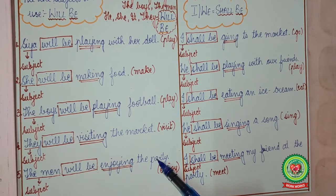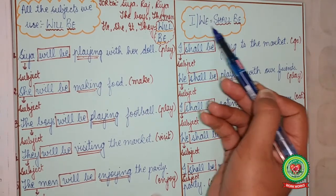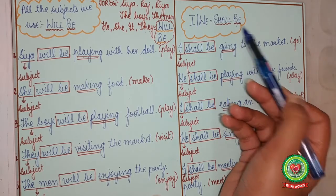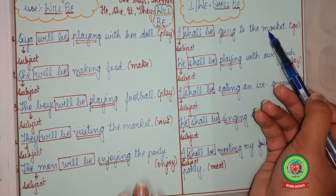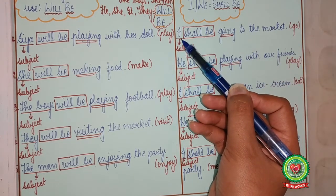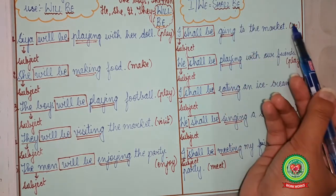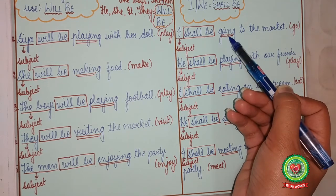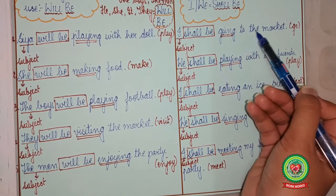Now, here is an exception. With I and with we, we will always use shall be. Let us see a few examples. I dash to the market, and the verb is go. Who? I — so subject. With I we will always use shall be. Go will change to present form of verb plus ing, that is going. So the answer is: I shall be going to the market.